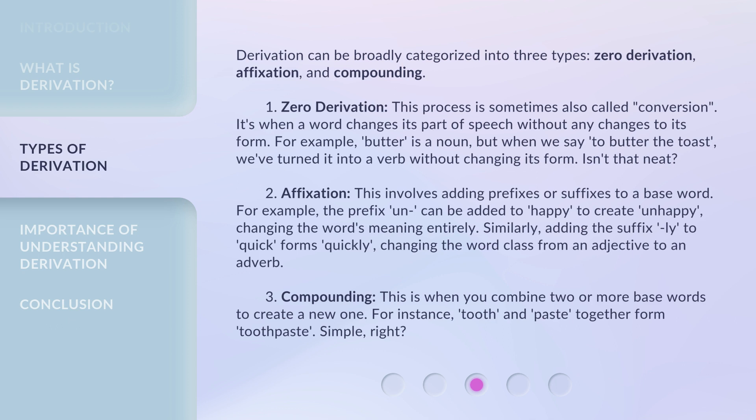2. Affixation. This involves adding prefixes or suffixes to a base word. For example, the prefix 'un' can be added to 'happy' to create 'unhappy,' changing the word's meaning entirely. Similarly, adding the suffix 'ly' to 'quick' forms 'quickly,' changing the word class from an adjective to an adverb.